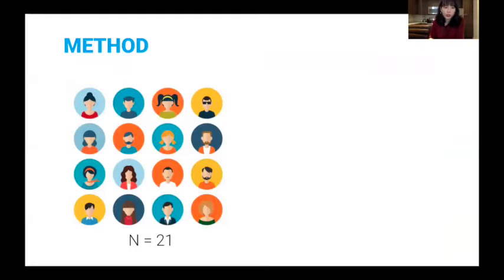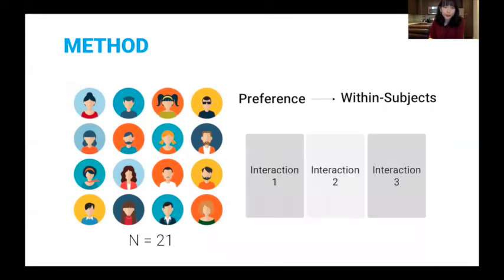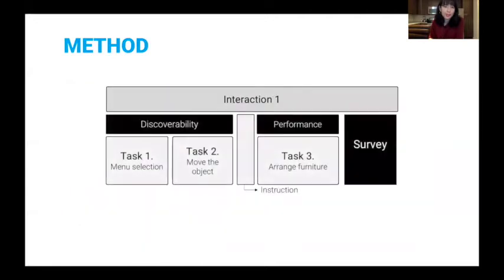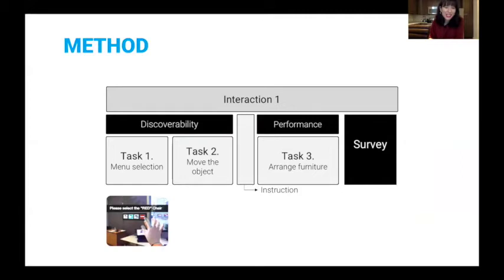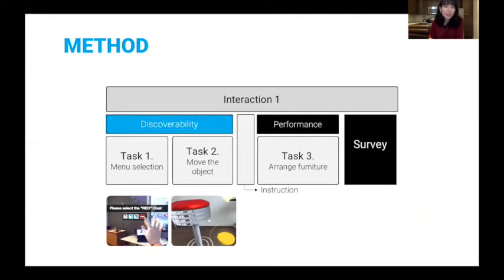In our user study, we recruited 21 participants. Because we were interested in the preferences among these three different interactions, we used the within-subject study design. We asked them to experience three different interactions, and the order of these interactions was randomized in order to minimize the order effect. We asked them to complete three different tasks. The first task is selecting the menu, and the second task is move the chair into the designated area. Because the focus here was discoverability, we didn't give them any instruction. They had to figure out how to select and move the item by themselves. Then after we gave them instruction how to use each interaction design, we tried to measure accuracy and efficiency by giving them a more complicated task.